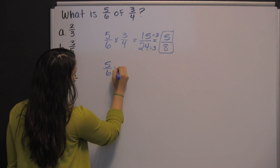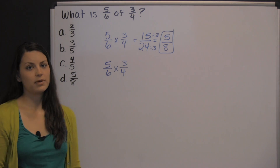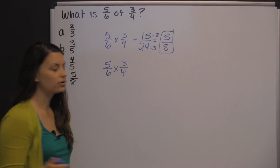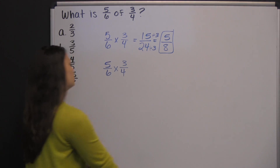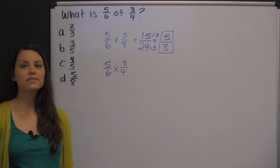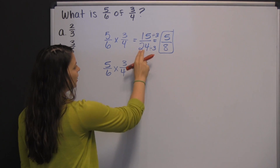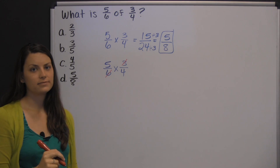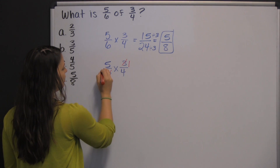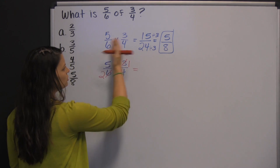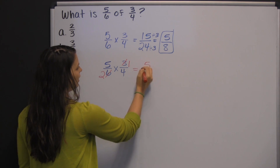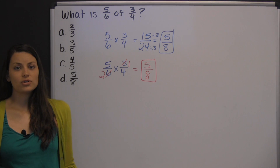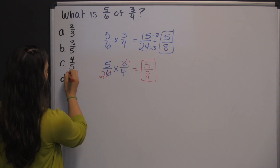Another way to multiply fractions is to cross-cancel before multiplying — it's like simplifying before you multiply instead of after. We can cross-cancel the three and the six because they're both divisible by three. Three divided by three is one; six divided by three is two. Now multiply straight across: five times one is five, and two times four is eight. Both methods yield the same result — five-eighths — and it's up to you to choose which method you prefer.